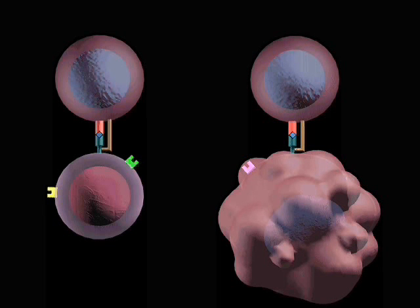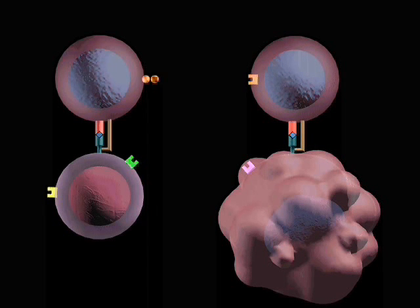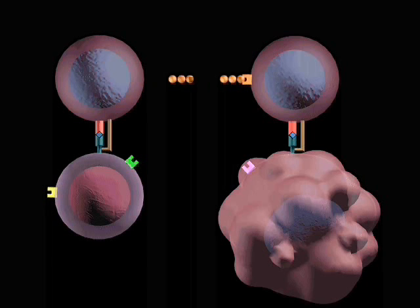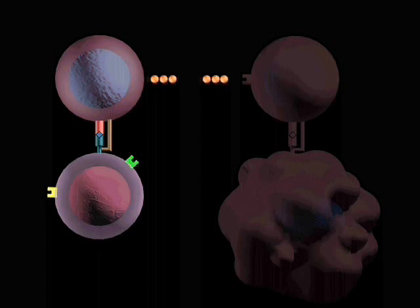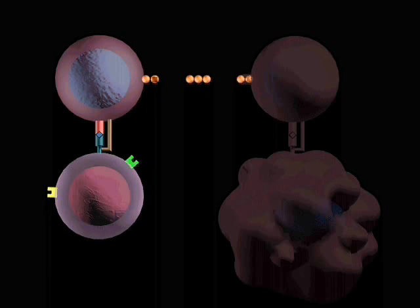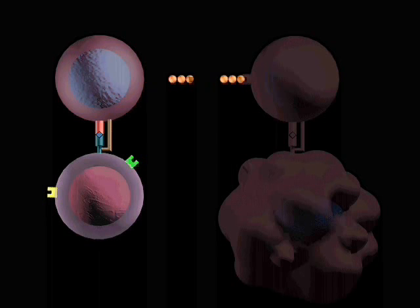When an antibody response takes place, interleukin-10 produced by the Th2 cell will prevent Th1 cells from producing interferon gamma, effectively suppressing the cell-mediated response.